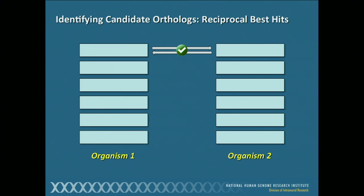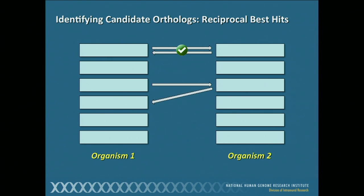This is a method that works really well. It has a very low false positive rate, but it doesn't always work. Let's take a second case where we take a particular gene, do the similarity search, and it finds a gene in organism two. But then when we use this as the search query against the genome, it hits one of the other genes. You need to probe further here — obviously these genes are all related to one another, but that reciprocal best relationship didn't happen, and that is more than likely because these two genes are paralogous to one another.